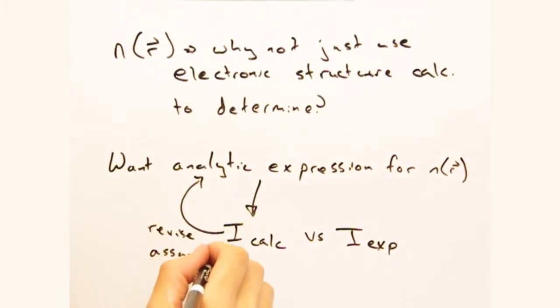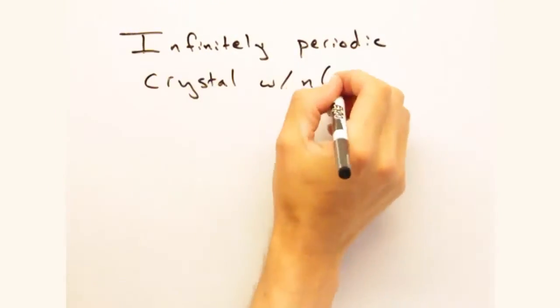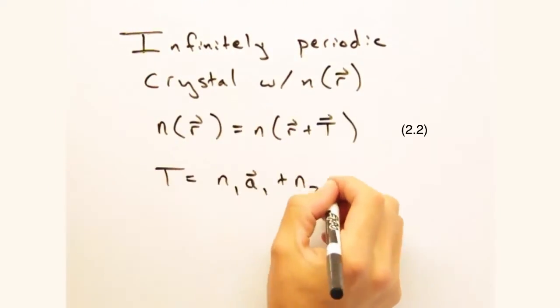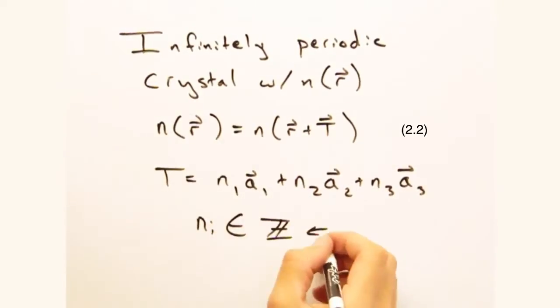Okay, that makes sense. So we're starting with a crystal that's infinitely periodic in all directions, and ultimately we want to get to an analytic expression for intensity.